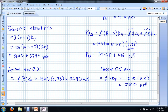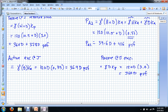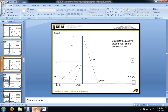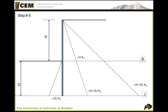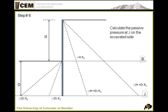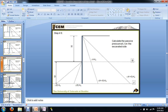We now have active and passive pressures at all reference points B and J on both the retained and excavated sides. In the next lesson we will talk about how to balance the forces below the excavation, beginning with the sum of forces, to solve for the unknown embedment depth D.